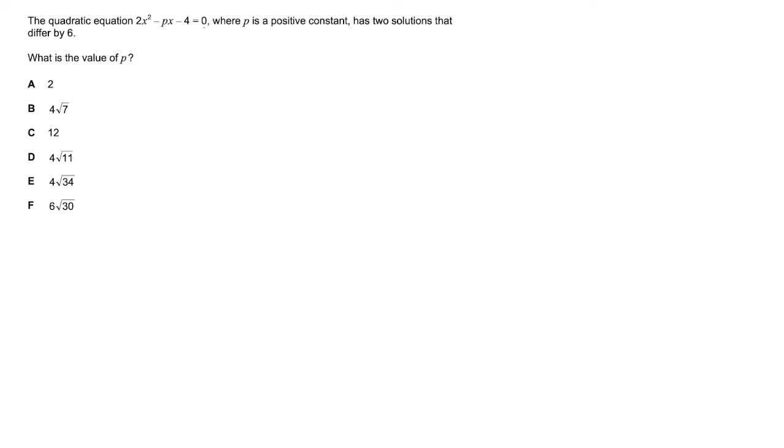The quadratic equation 2x² - px - 4 = 0, where p is a positive constant, has two solutions that differ by 6. What is the value of p?